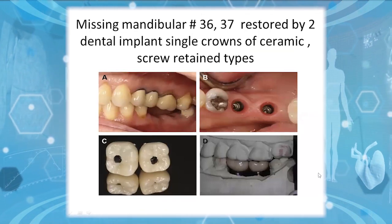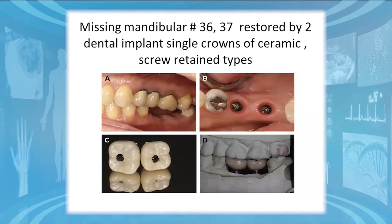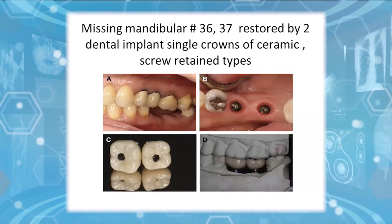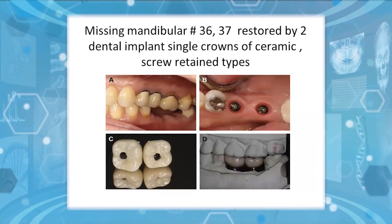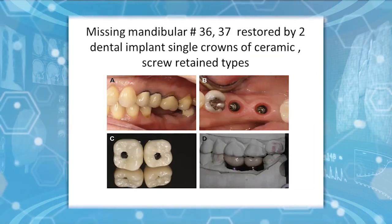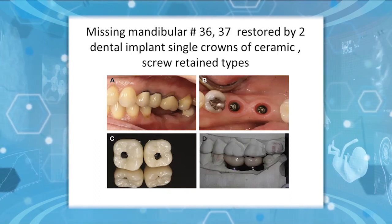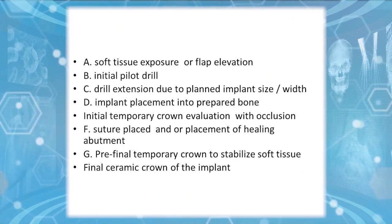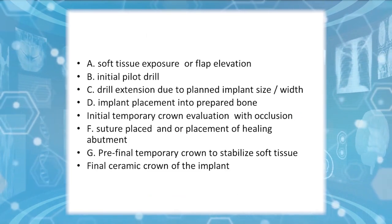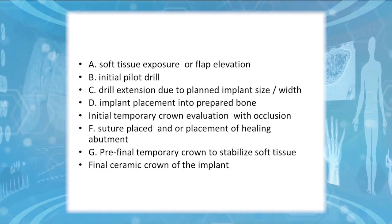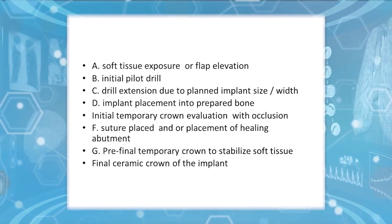Another case shows a patient missing mandibular right first and second molars, restored by dental implants with single ceramic crowns using screw-retained type. Image 1 shows the missing lower molars. Image 2 shows the implants osseointegrated and fused with the bone. Image C shows the crowns with screw holes at delivery. Image D summarizes the steps: soft tissue exposure, initial drilling, implant placement, temporary crown to stabilize tissues, sutures, and final crown delivery.